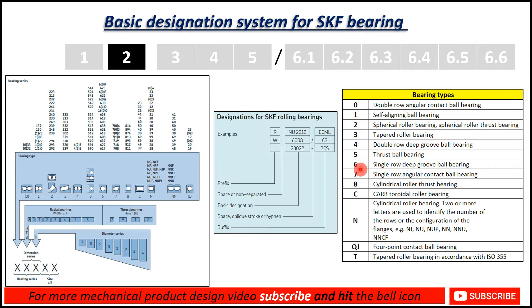If the bearing number starts with six — for example, 6008 — the first digit shows the type of bearing. Here it is a single row deep groove ball bearing. The last two digits show the internal diameter. Here, 08 means we multiply by five: 8 × 5 = 40 mm internal diameter.